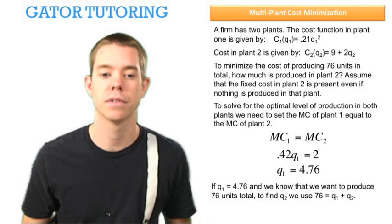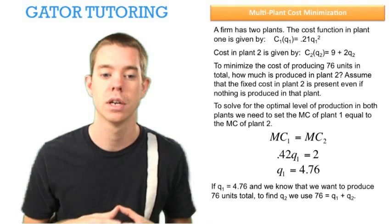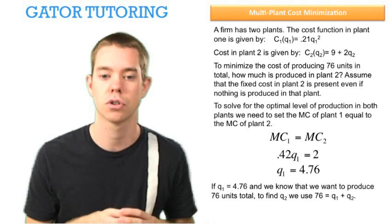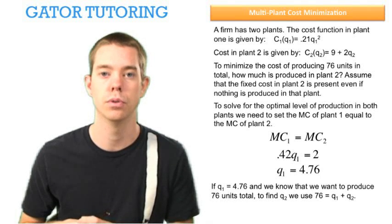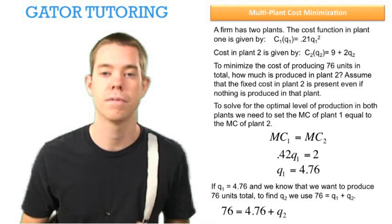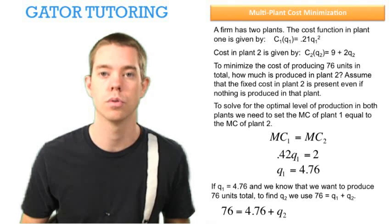If q1 equals 4.76 and we know we want to produce 76 units total, to find q2 we use 76 equals q1 plus q2, plug in what we found for q1, and solve for q2.